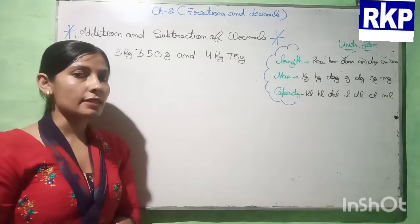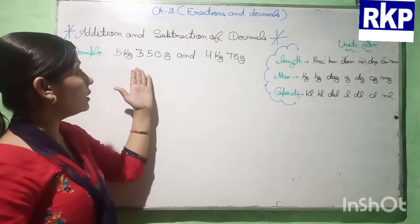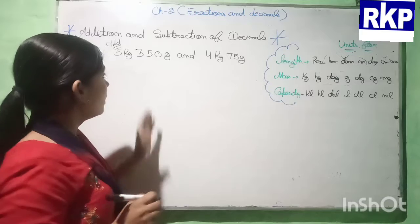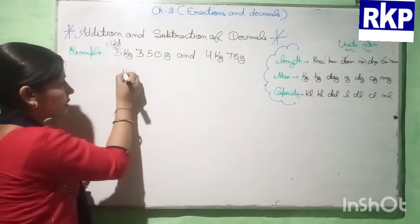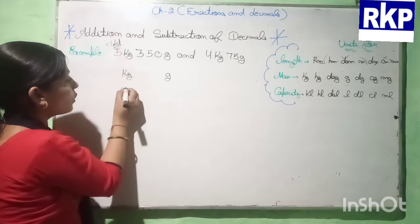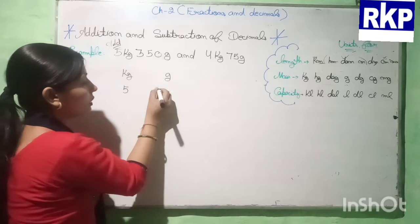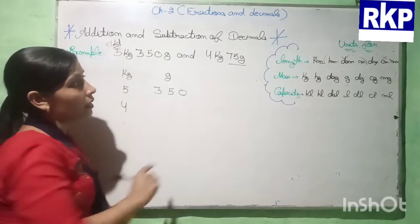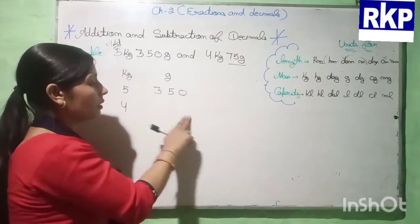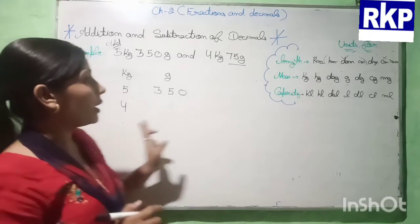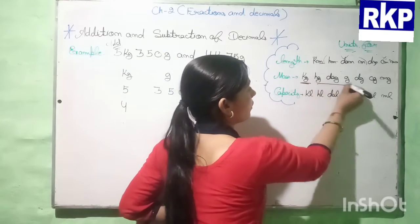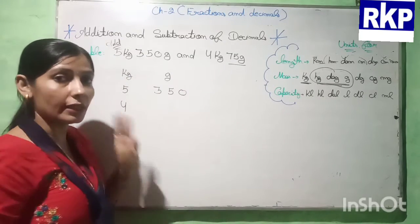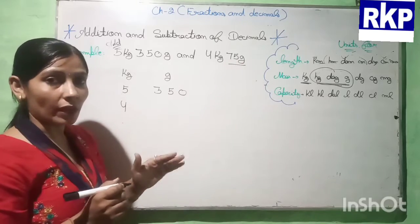Let us take one more example. Here we have to add 5 kilograms 350 grams and 4 kilograms 75 grams. We are having two units, so first we will write the units on the upper side and then the numbers. Here 5 kilograms is given so we write 5, and then 350. Here 4 kilograms and 75 grams — but here we are having only two digits and we should have three digits, because after kilogram we are having three units. So how can we write 75?